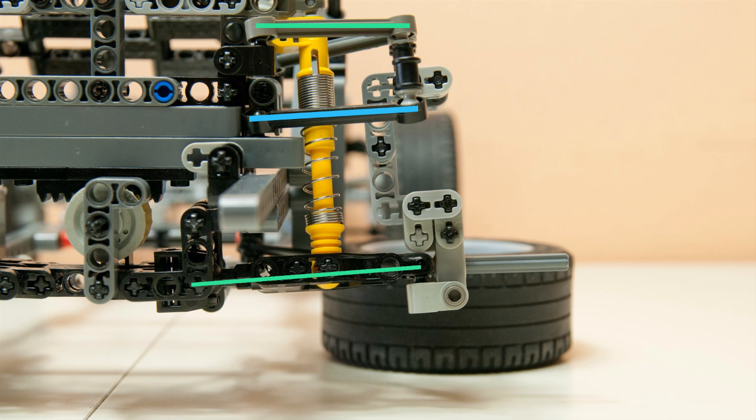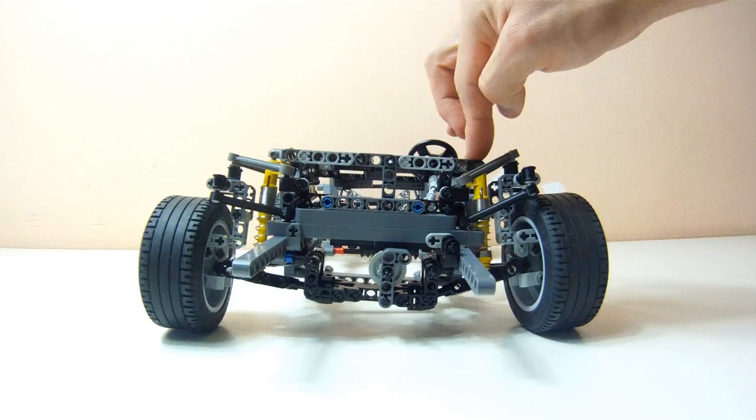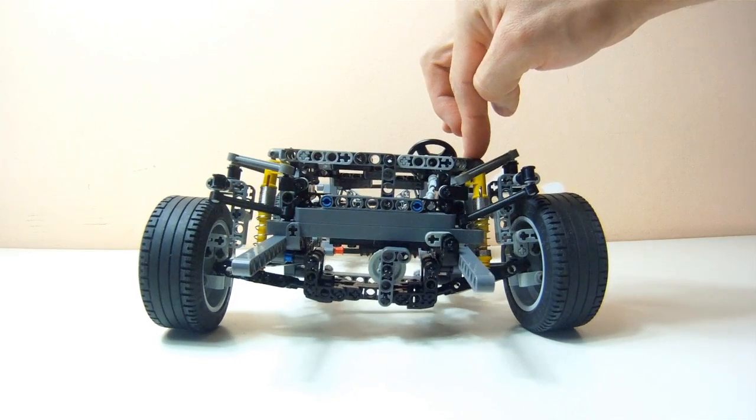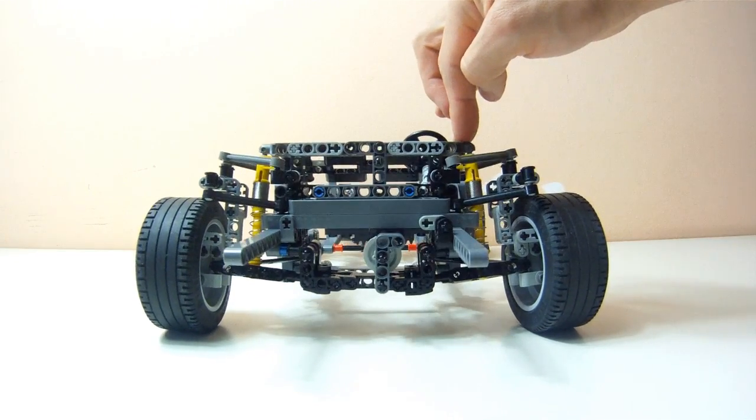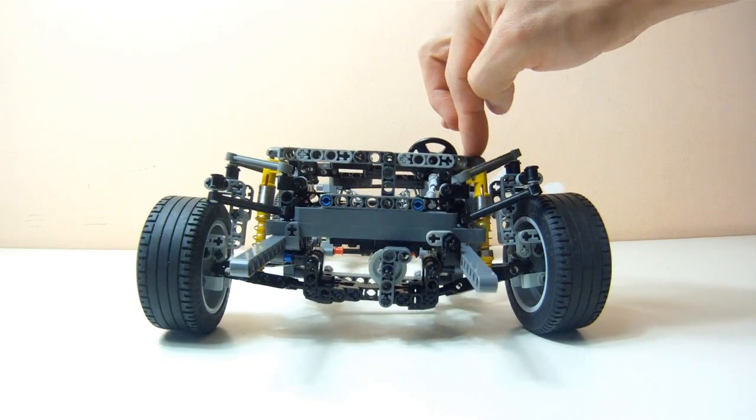And since the suspension also has two long suspension arms on the bottom and two short ones on top, we can again see how the wheel stays upright and keeps the contact patch with the road intact when the car is leaning to one side when cornering.